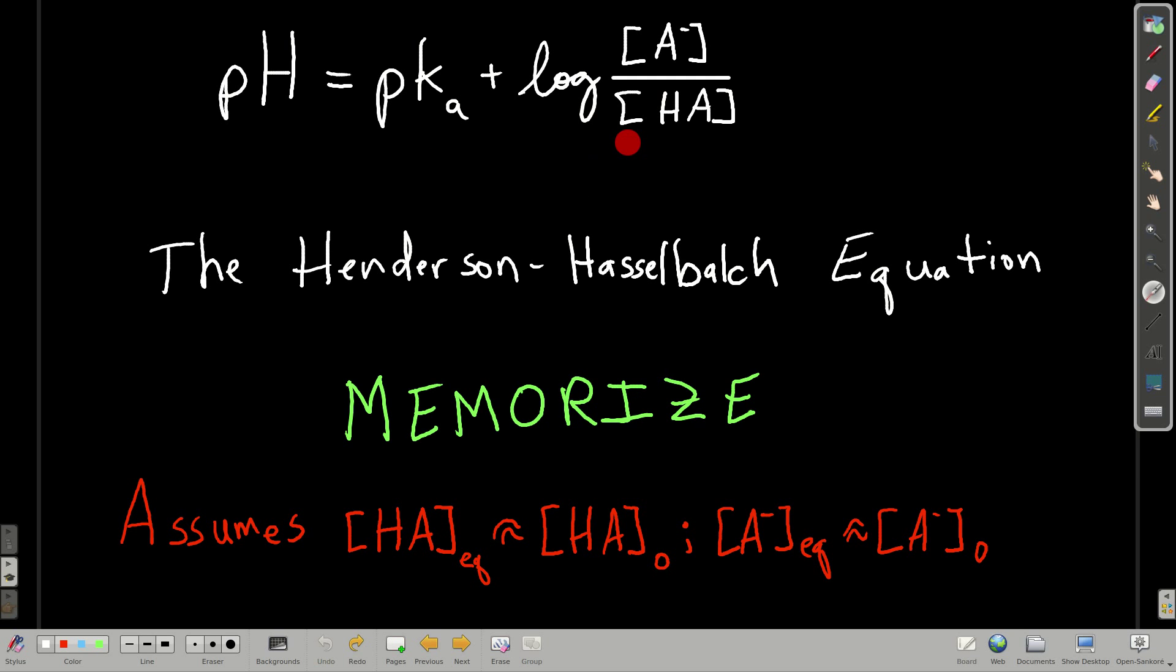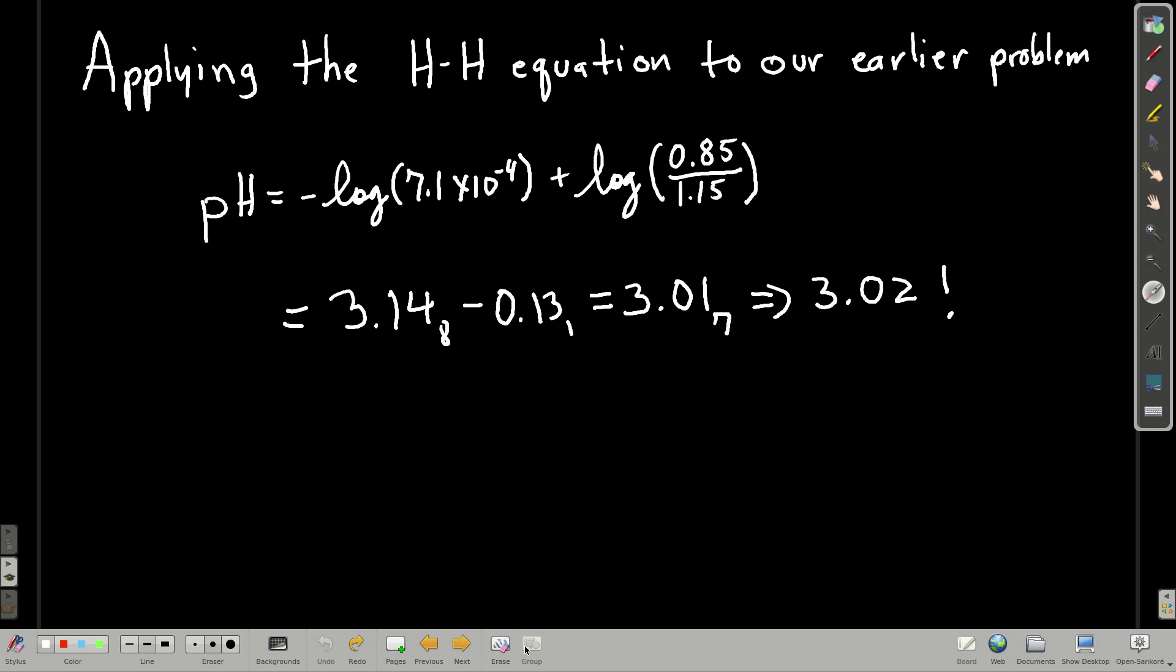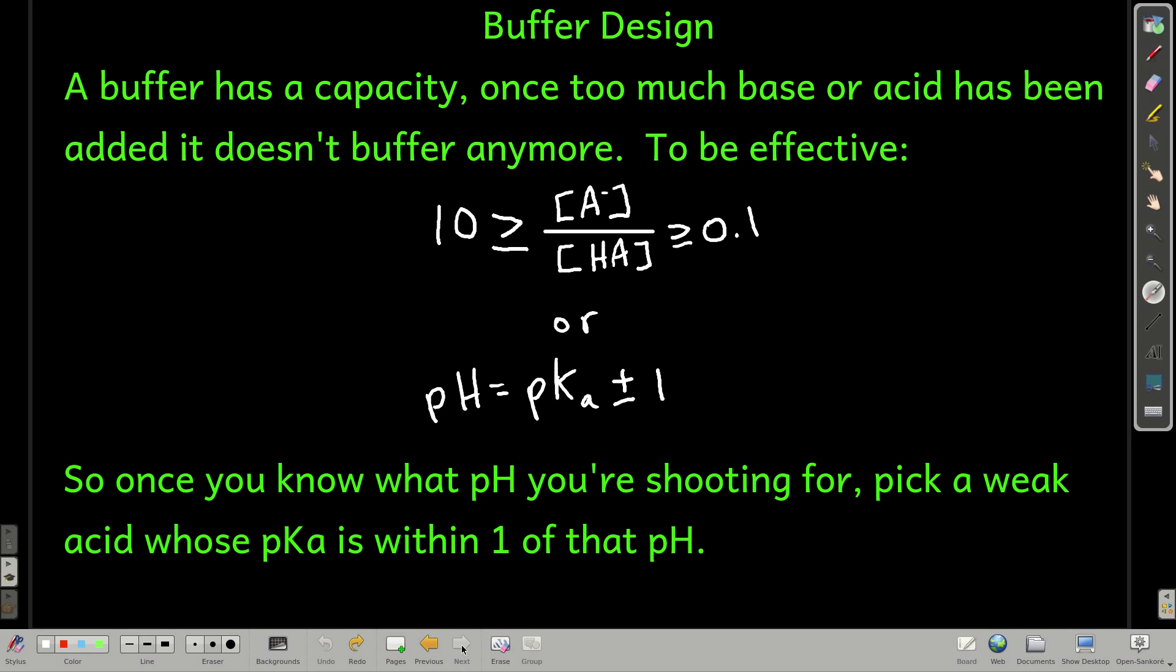At halfway to the equivalence point, this is true. These are equal. We've added exactly half amount. Say you're reacting a weak acid with sodium hydroxide and when you're halfway to the equivalence point, half that weak acid has been turned into its conjugate base. And so these concentrations are equal. So log of this is 0, log of 1 is 0 and pH is equal to pKa. So that's how you make a buffer and that's the Henderson-Hasselbalch equation. Thank you.